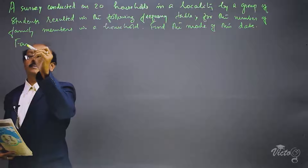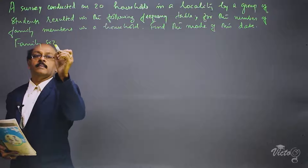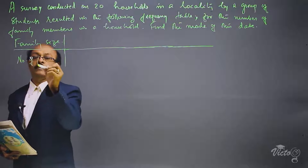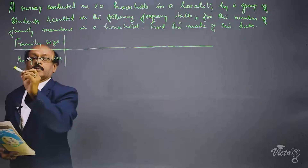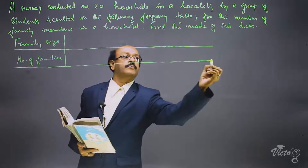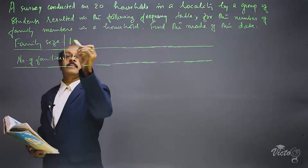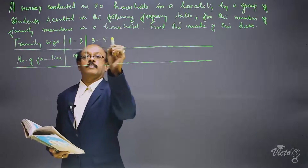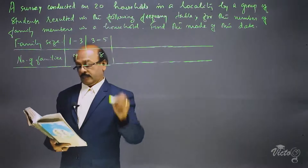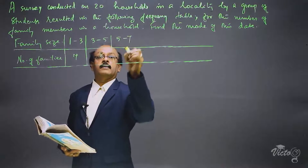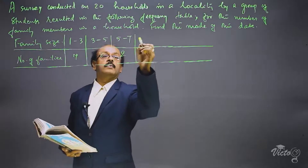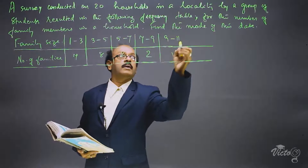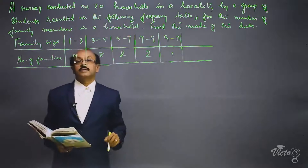The table has two columns: Family Size and Number of Families. The class intervals are: 1 to 3 with frequency 7, 3 to 5 with frequency 8, 5 to 7 with frequency 2, 7 to 9 with frequency 2, and 9 to 11 with frequency 1.